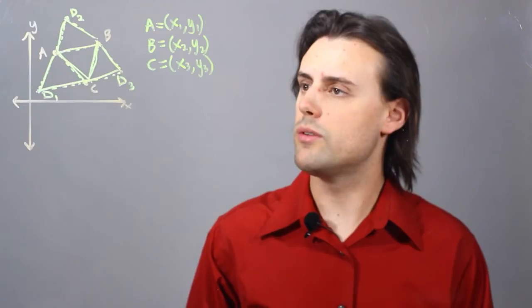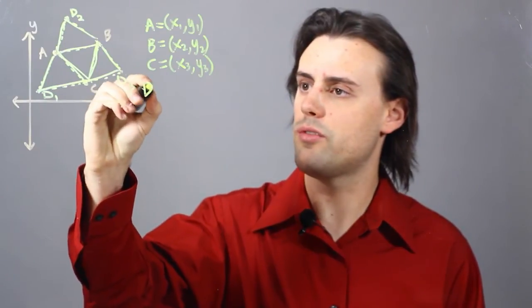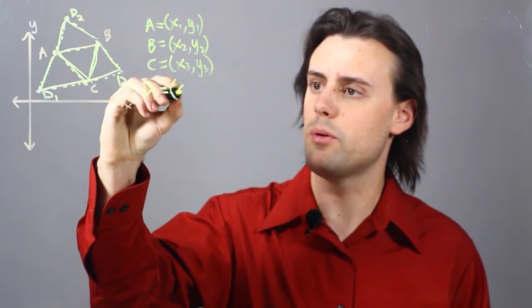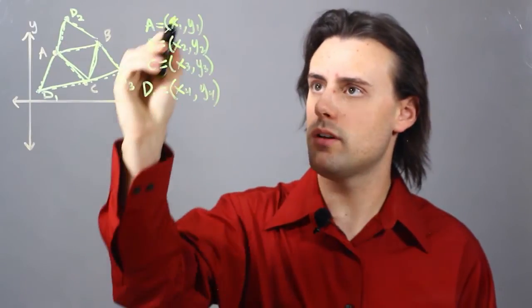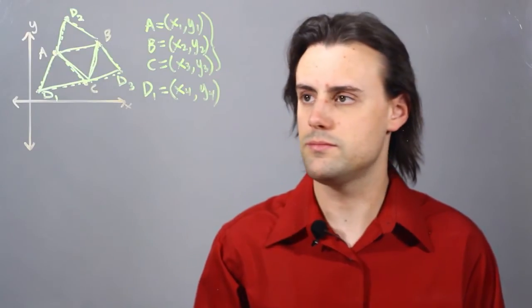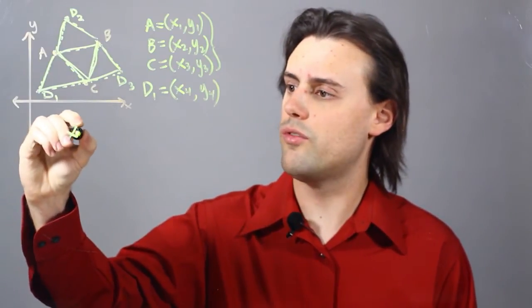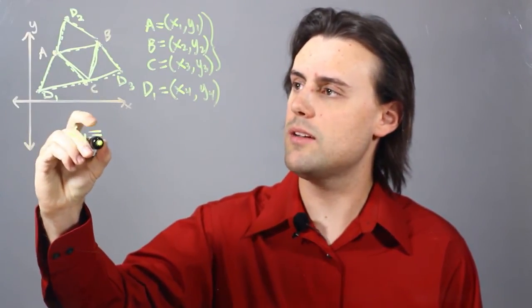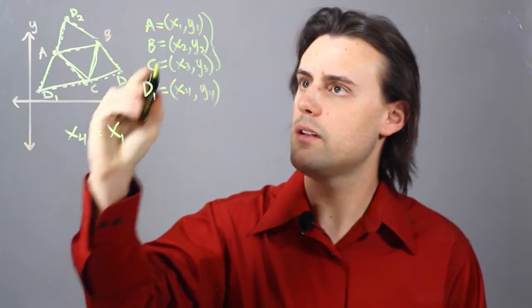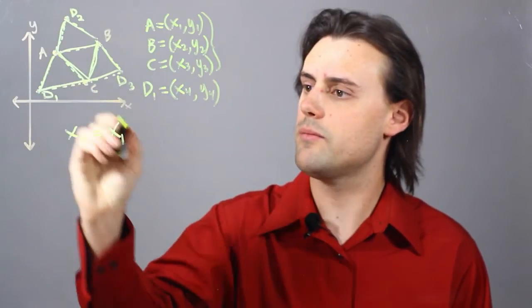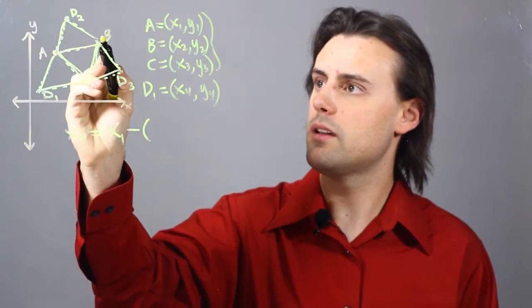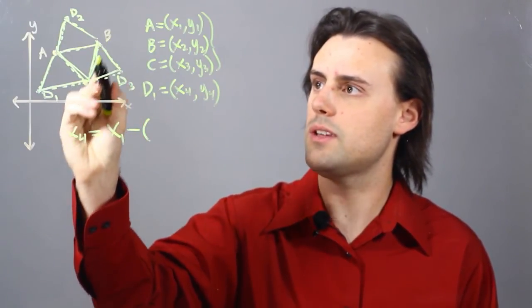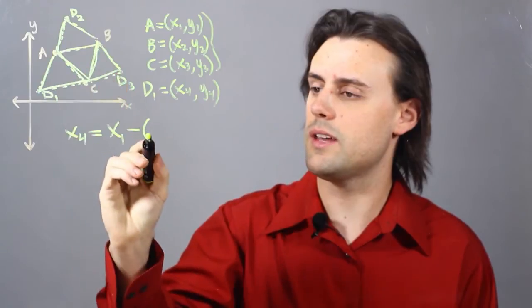If I wanted to calculate what the coordinates for D1 would be, for example x4, y4, I can do so in terms of this given information. So x4 would actually be equal to x1, the x component of A, minus the difference between the x component in B and C, so this difference in the x direction.